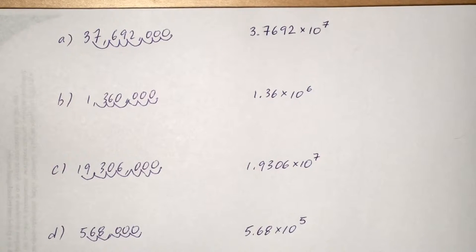So if you look at A, we're going to take that decimal and move it in between the 3 and the 7. You're always going to want to put it after that first digit. So the number of spaces we moved it is 1, 2, 3, 4, 5, 6, 7. So that's where that 10 to the 7th comes from.